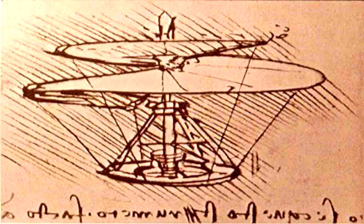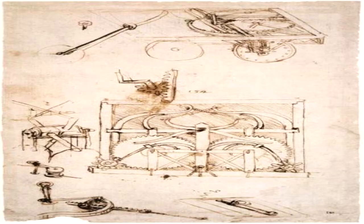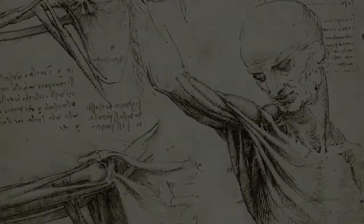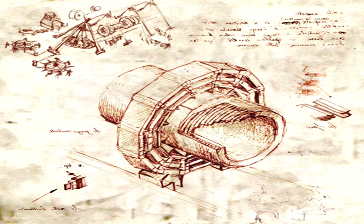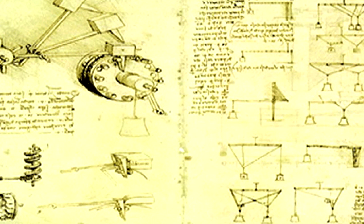Como ingeniero e inventor, Leonardo desarrolló ideas muy adelantadas a su tiempo, tales como el helicóptero, el carro de combate, el submarino o el automóvil. Muy pocos de sus proyectos llegaron a construirse, entre ellos la máquina para medir el límite elástico de un cable, puesto que la mayoría no eran realizables en esa época. Como científico, Leonardo da Vinci hizo descubrimientos sustanciales en las áreas de anatomía, la ingeniería civil, la óptica y la hidrodinámica. Pero puesto que no publicó jamás sus hallazgos, estos tuvieron una escasa influencia, si es que alguna, en la ciencia posterior.